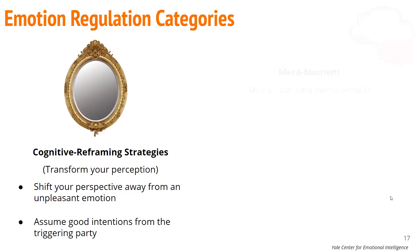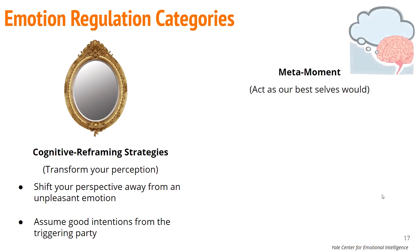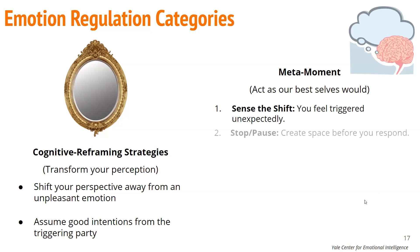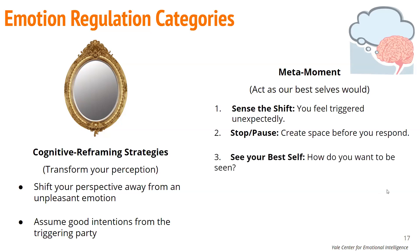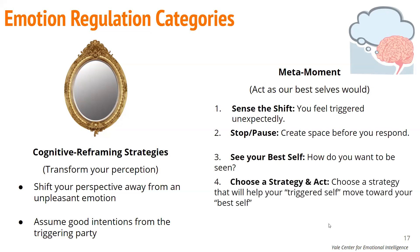And finally, we have the meta moment. This is very unique to the Yale Center for Emotional Intelligence. It's called a meta moment because it's a moment about a moment. In that moment, you are self-aware and you sense the shift — you sense that you are triggered unexpectedly. So then you stop and pause, take a breath, and ask yourself questions. You can ask yourself: what would my best self do right now? This helps redirect our attention toward how we'd like to be seen, how we'd like people to experience our company, and it really focuses us on our values. And then we choose a strategy that will help us move towards our best self.